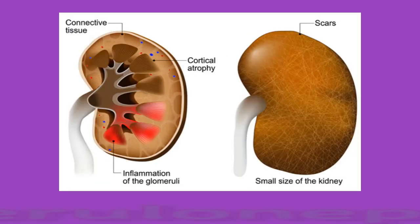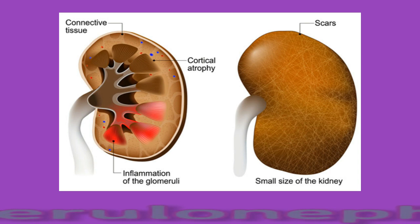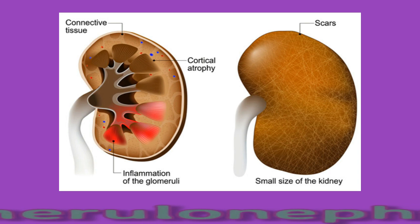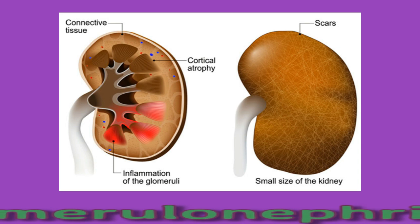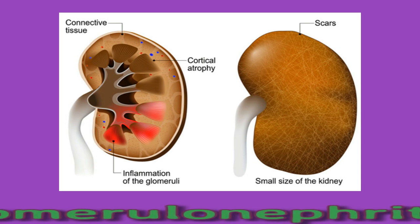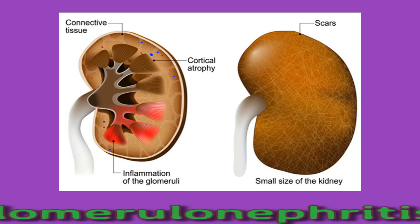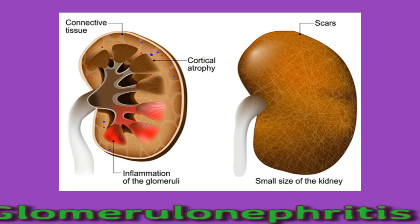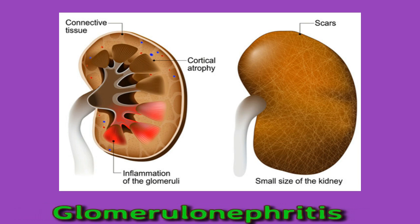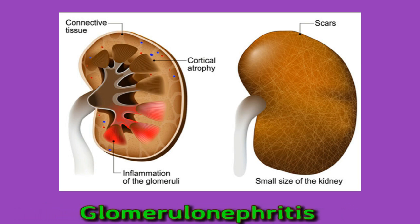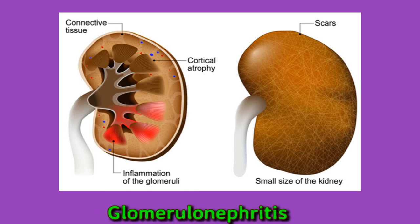Glomerulonephritis is a group of diseases that can cause kidney inflammation and damage the glomeruli, which filter blood. If damage occurs, the kidneys work less effectively and can eventually lead to kidney failure. There are two types: acute and chronic. Acute glomerulonephritis occurs suddenly and can accompany infections such as strep throat.